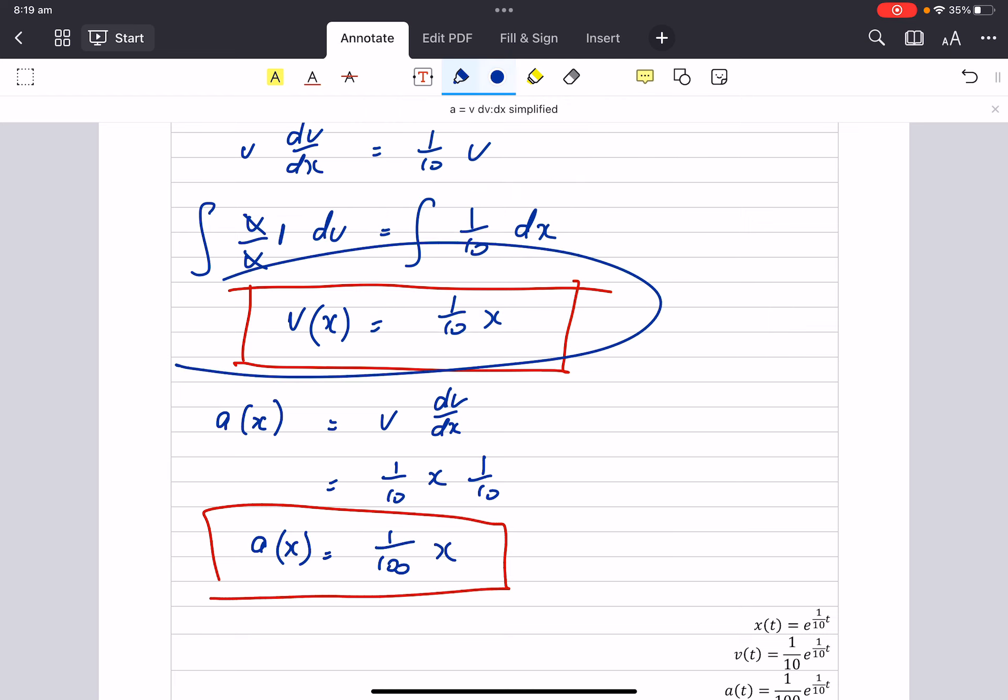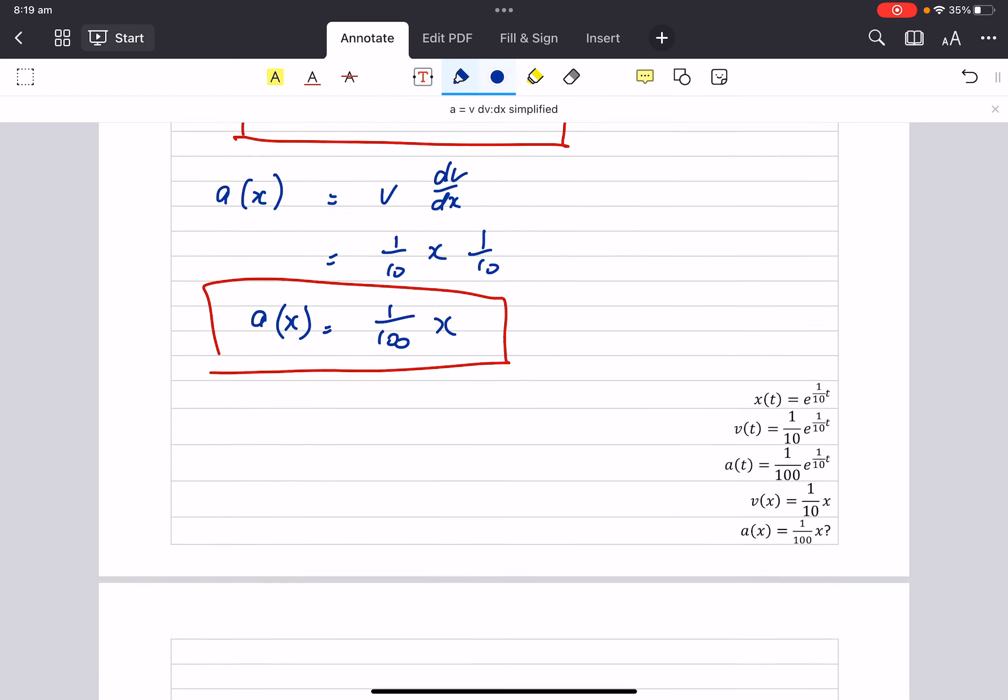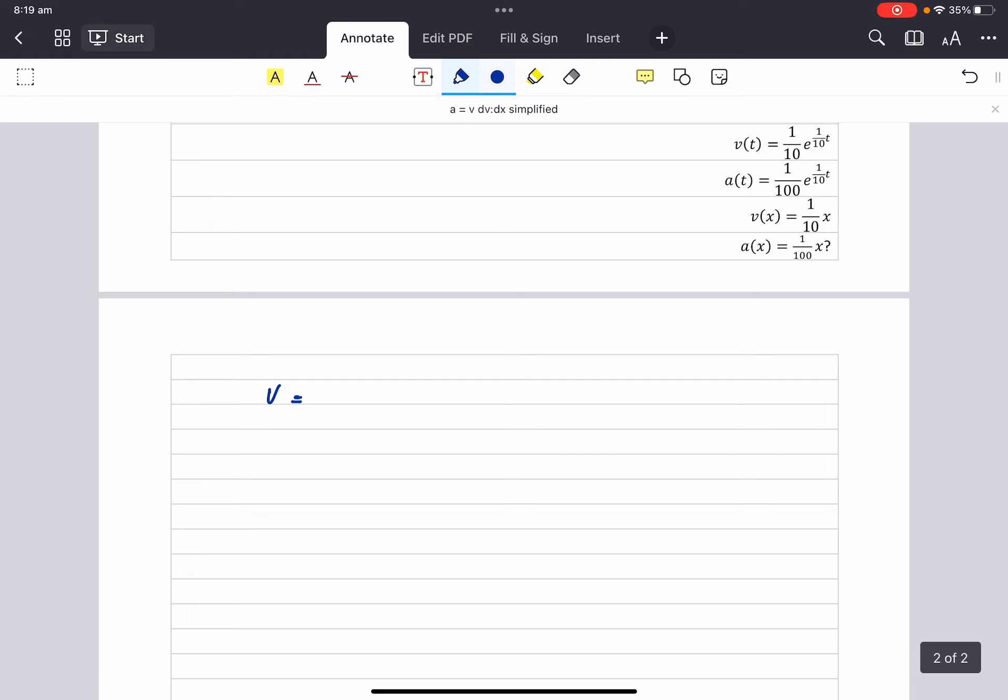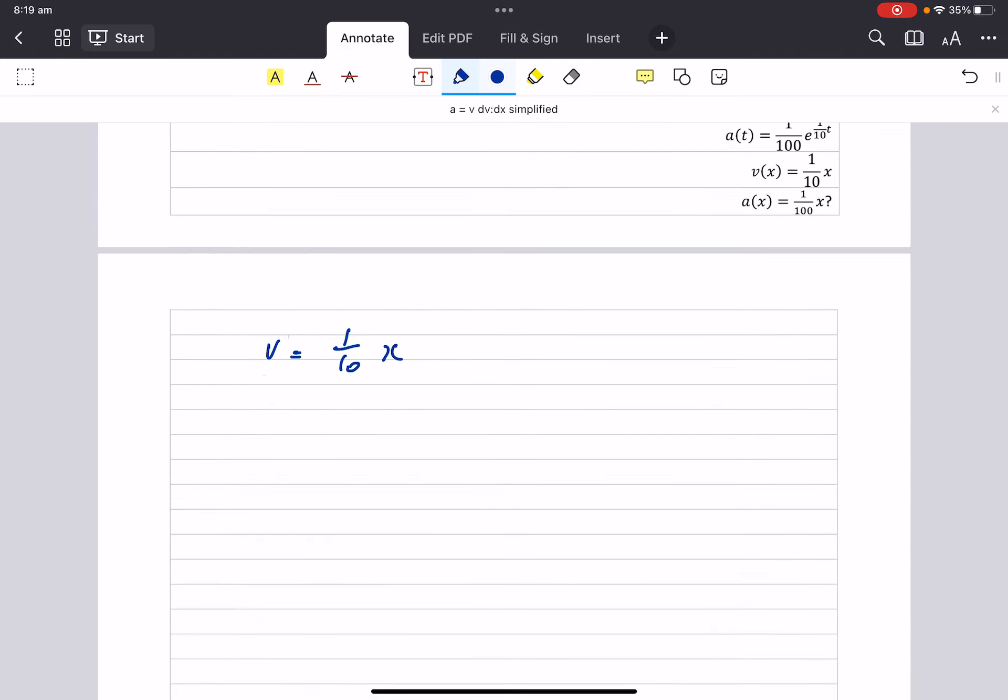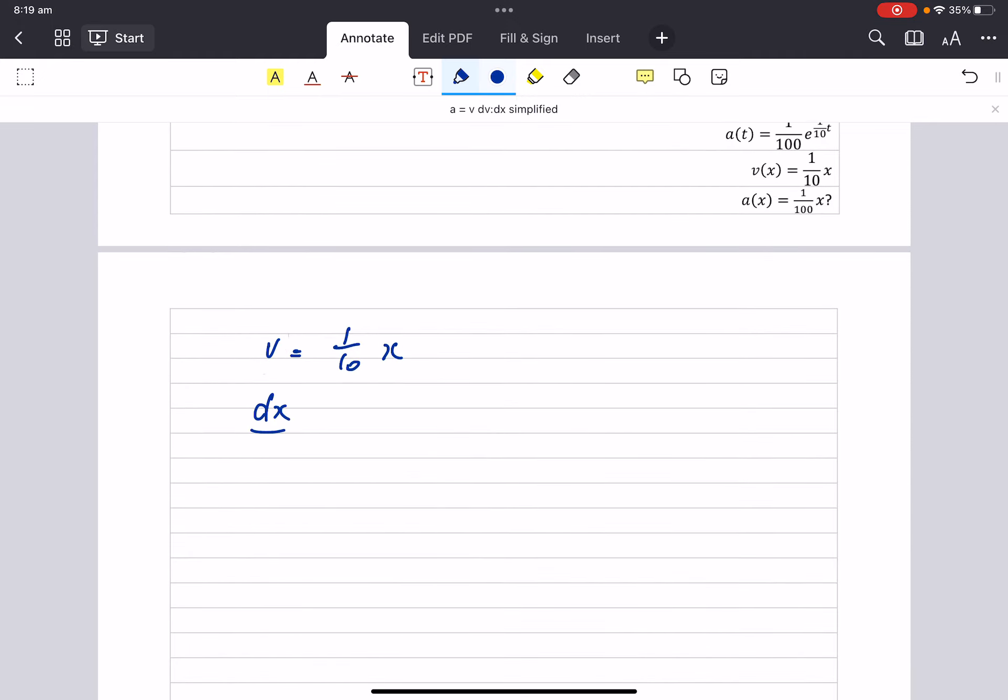I'm going to come back to this thing here. V equals one on ten x. We also know that velocity, this v, velocity is dx dt. This gets our time into our function.